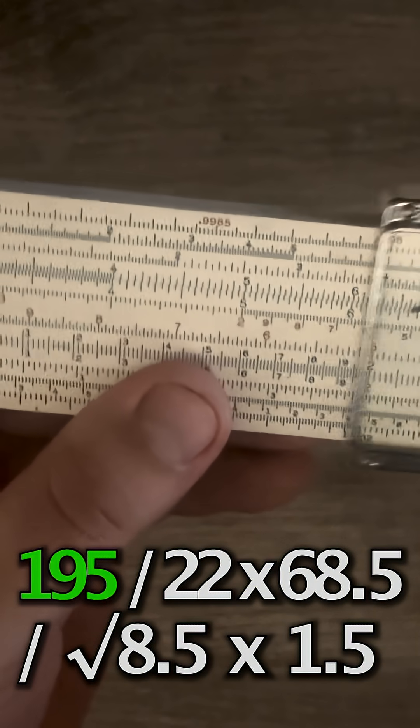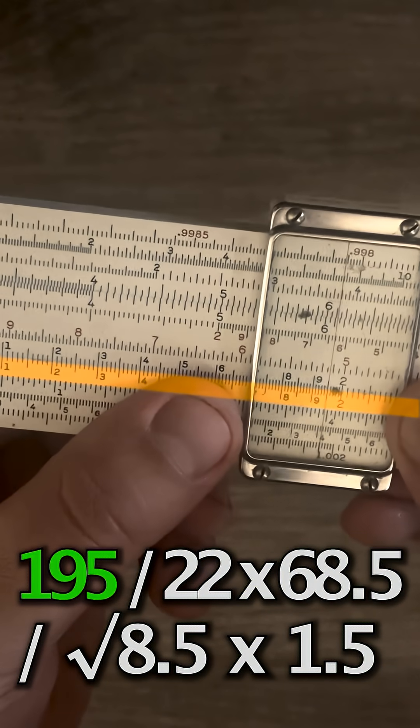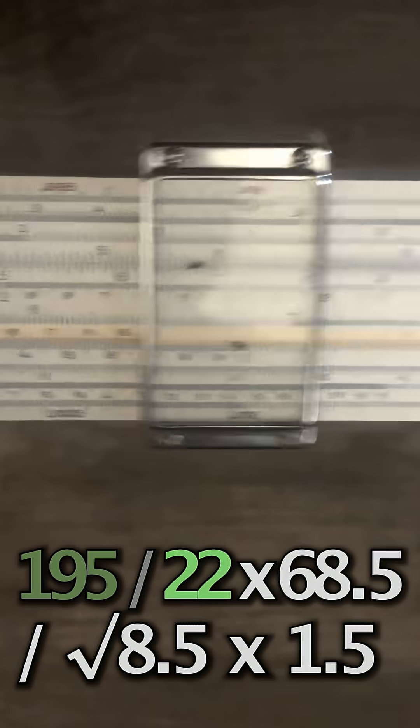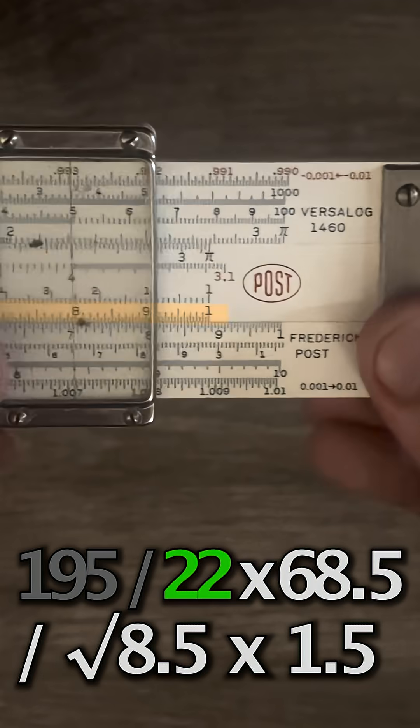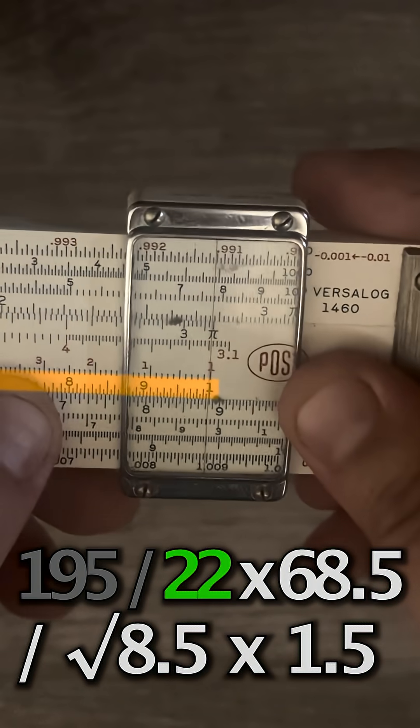So our first number is going to be 195. If we set our hairline to 195 on the d scale, we're going to divide by 22. So slide 22 to the hairline. Now we'll slide over to the right index. That'll be our answer for that.